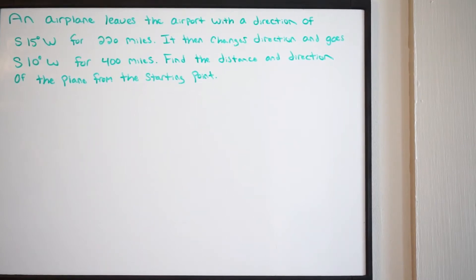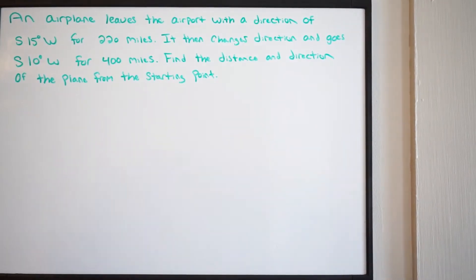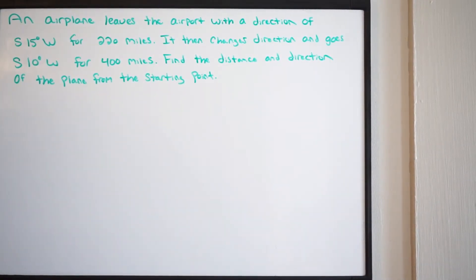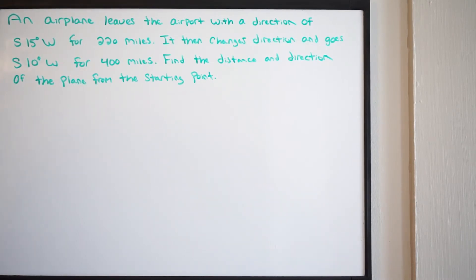All right, guys, in this example we're dealing with another vector application problem. So let's go ahead and read the problem, and then we'll talk about how we're going to set it up. It says an airplane leaves the airport with a direction of south 15 degrees west for 220 miles.